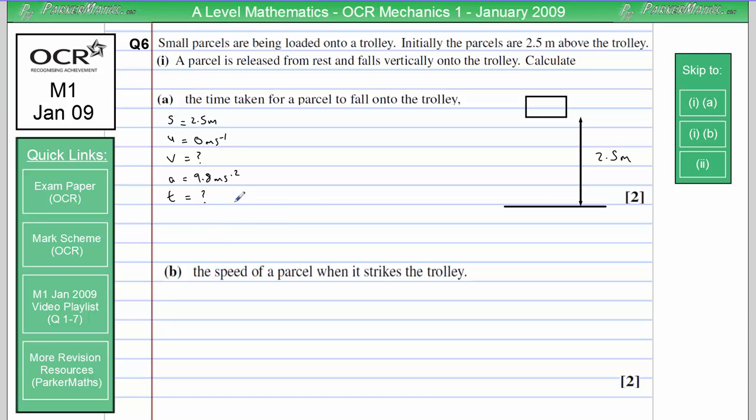So in order to find the time, we need an equation that involves S, U, A and T. The one we want is S equals UT plus half AT squared. Our displacement is 2.5. Because initial velocity is 0, this bit disappears. And we get half times 9.8 T squared.